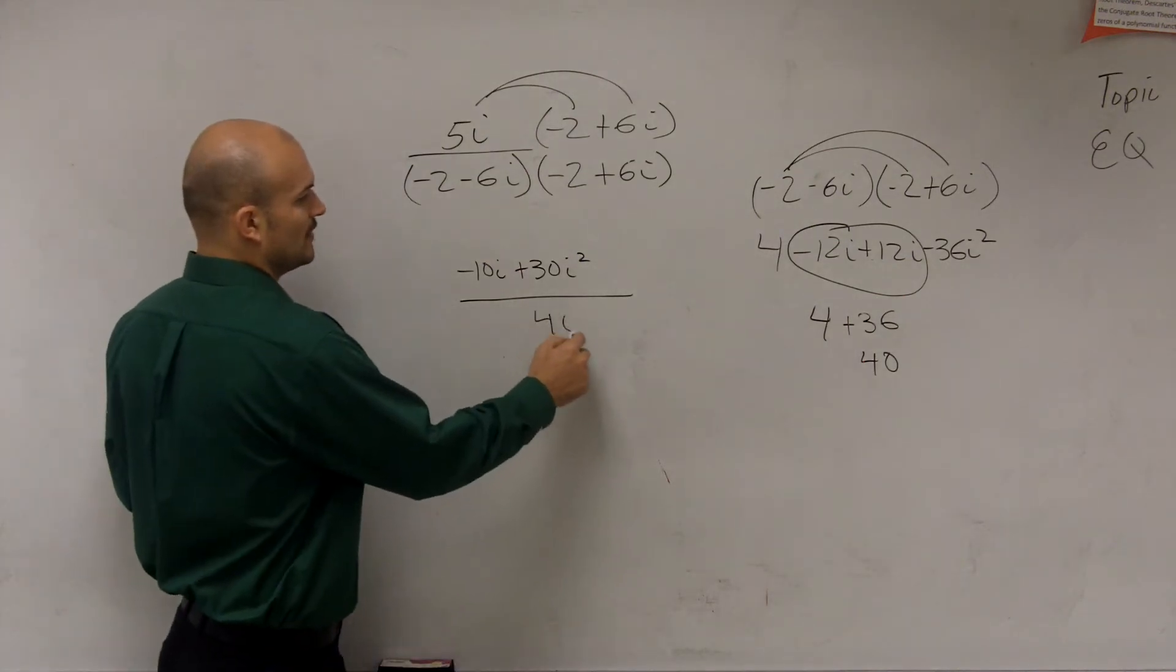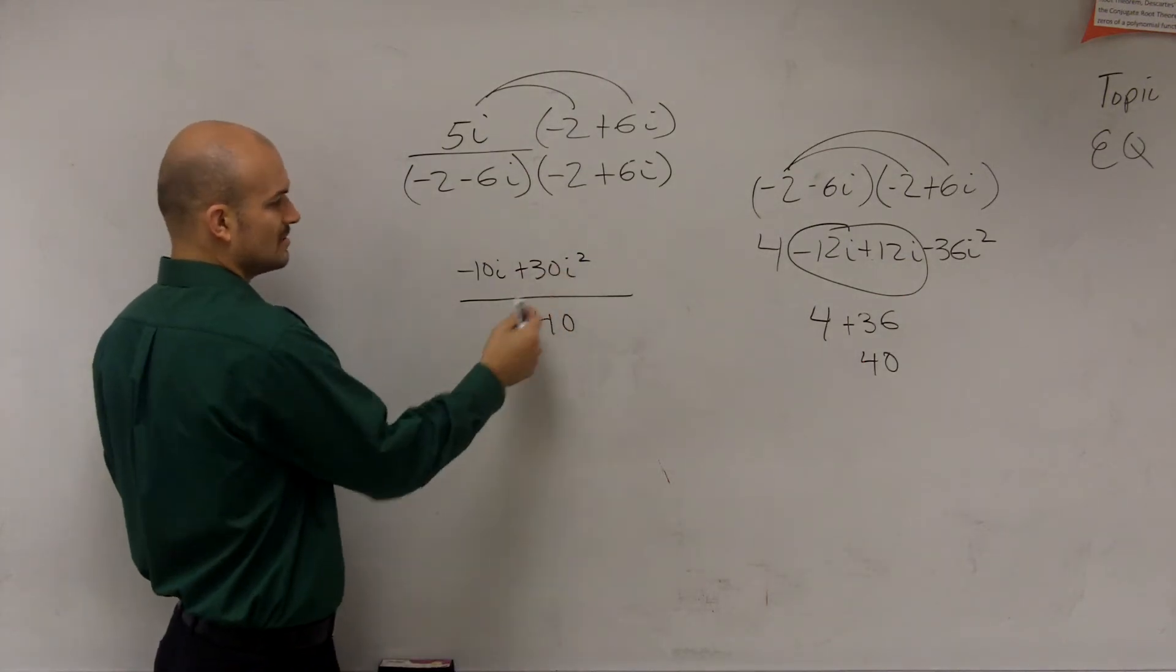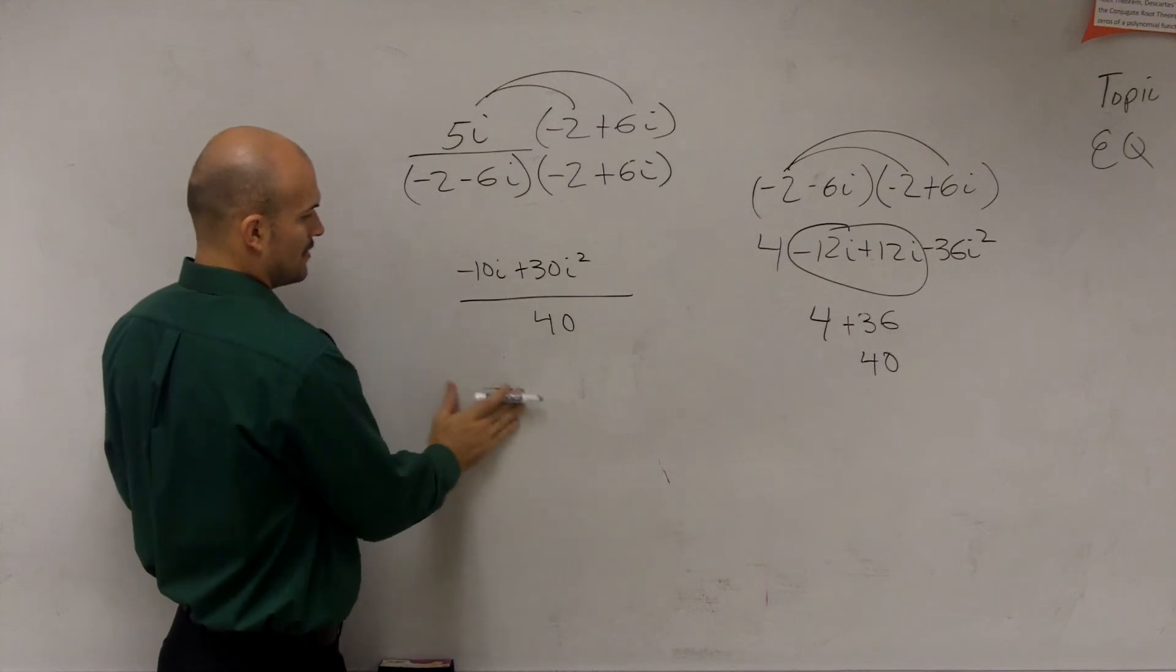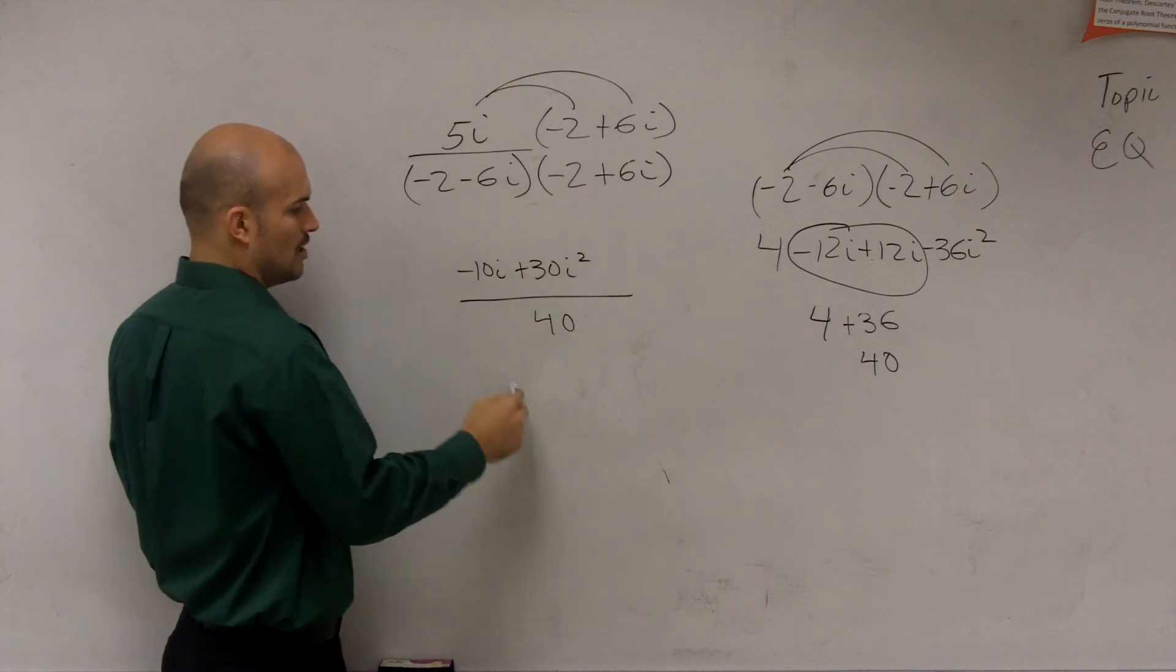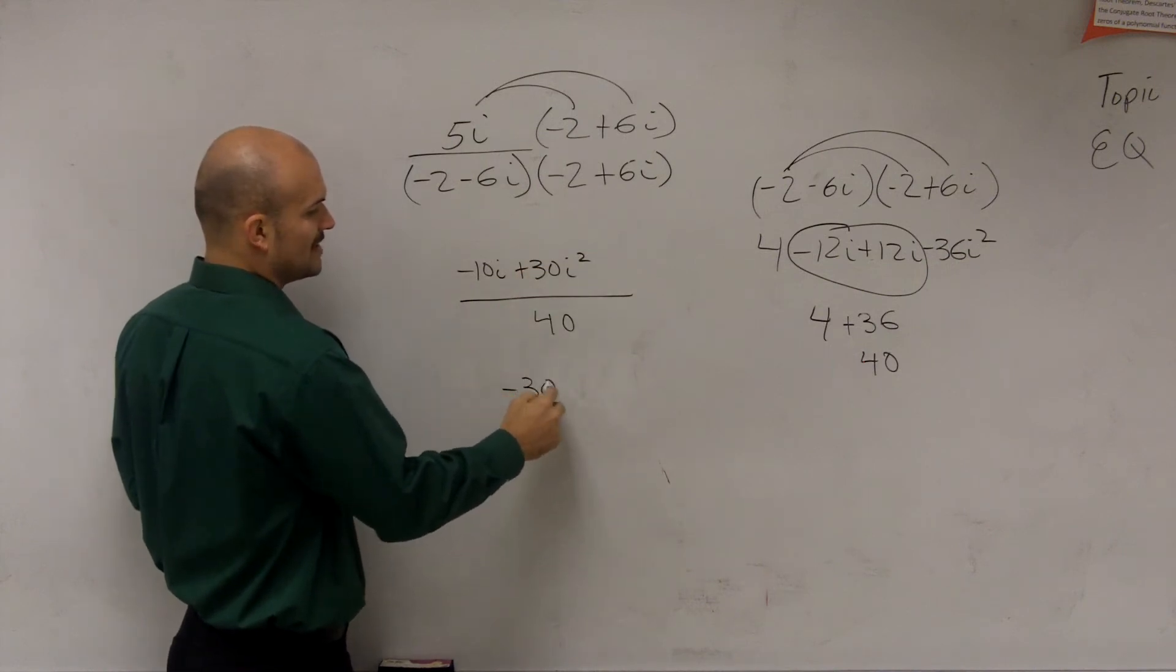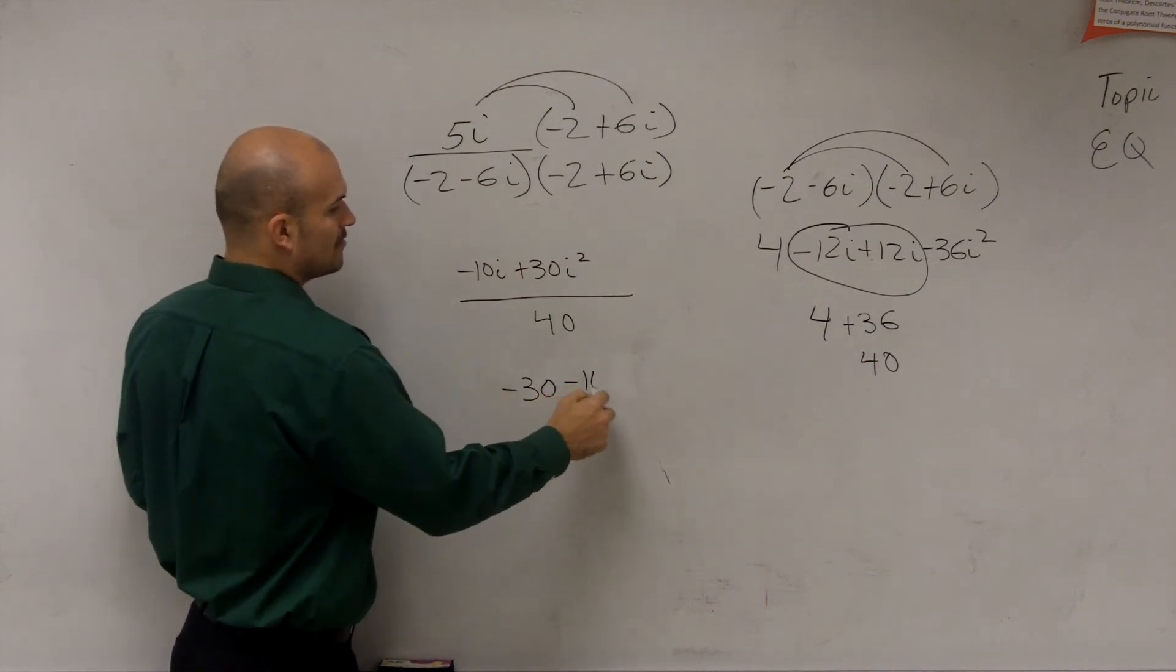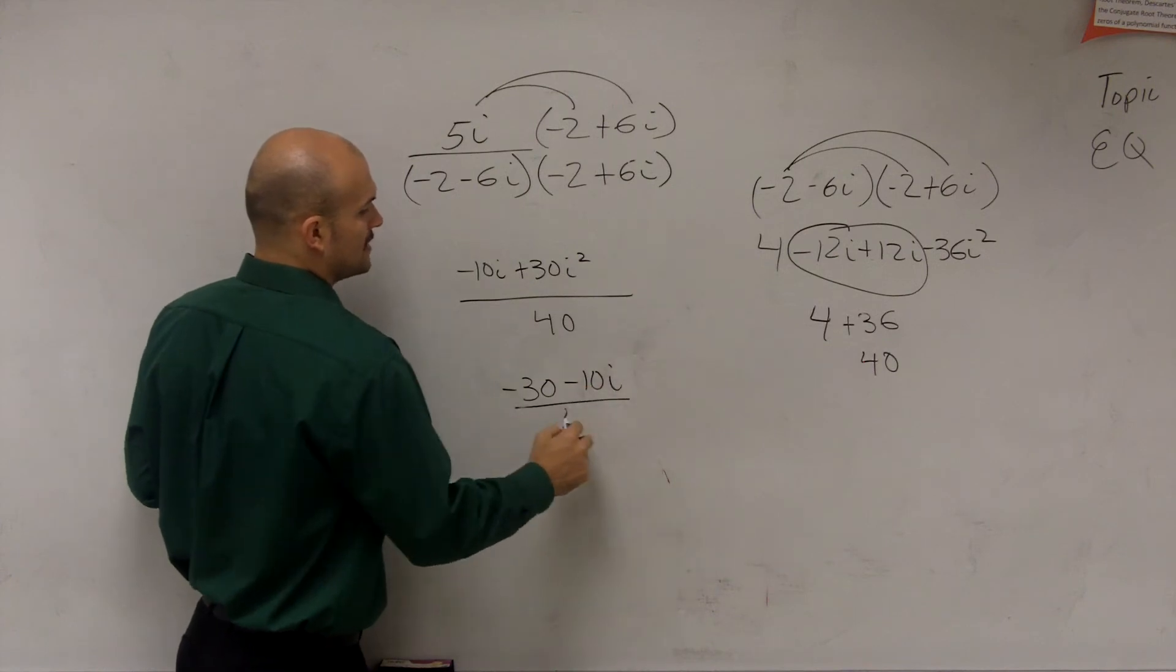So I can write 40 over here, but I want to rewrite this. So I can actually, let's rewrite this as complex number form. So this becomes i squared, which is negative 1. So my answer, well, not my final answer, but negative 30 minus 10i divided by 40.